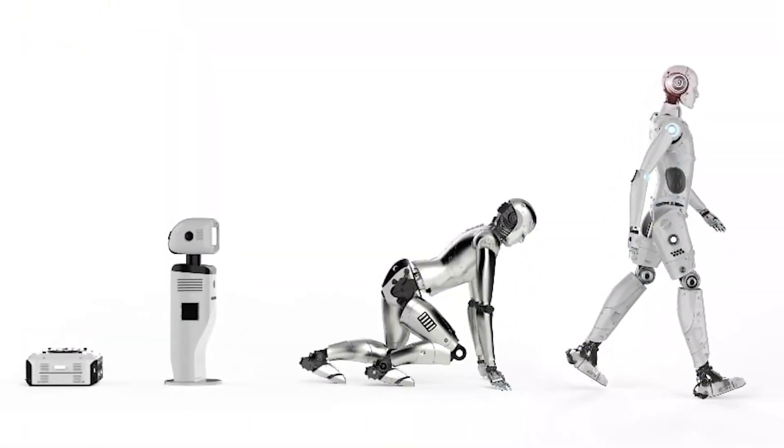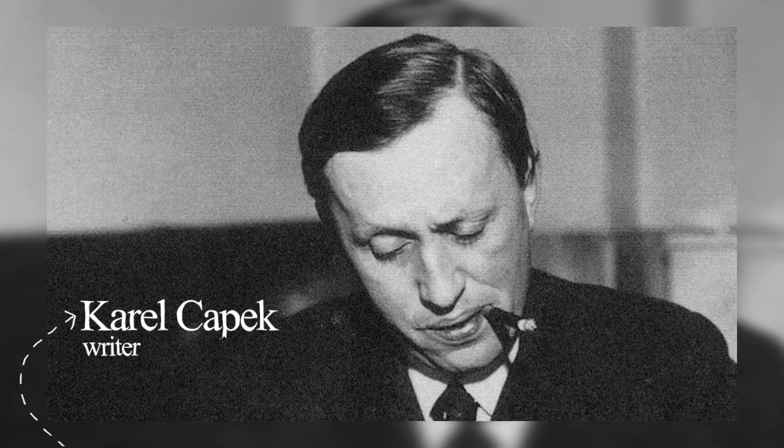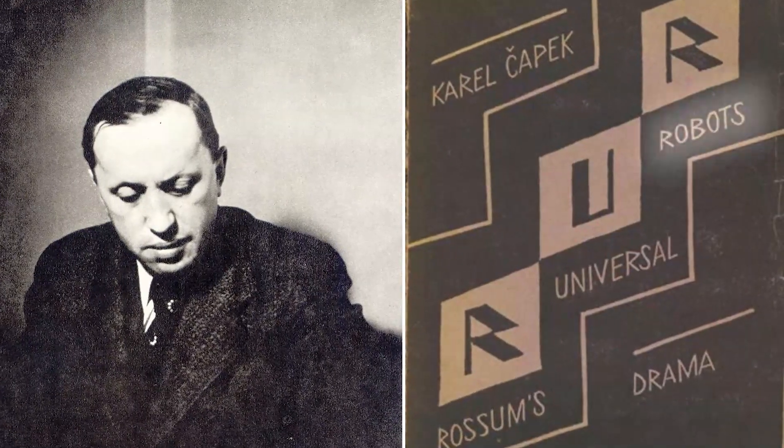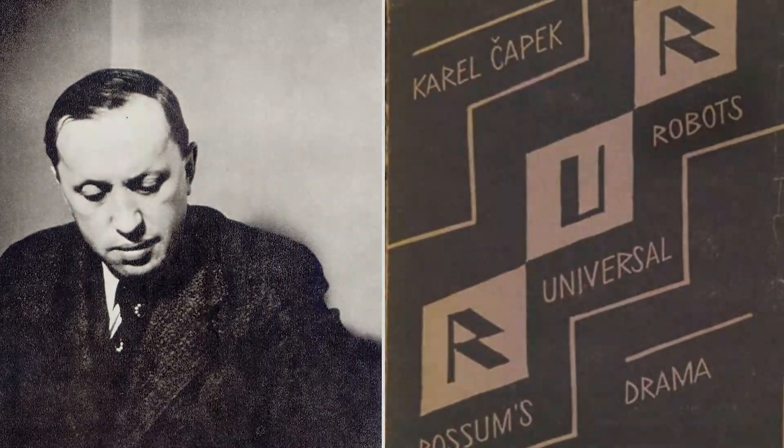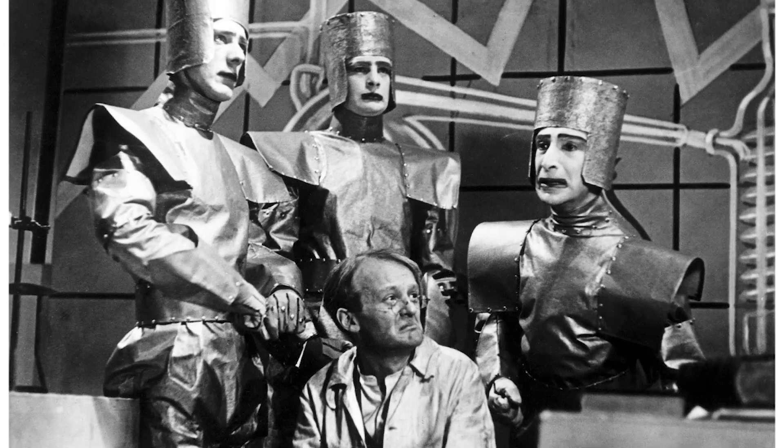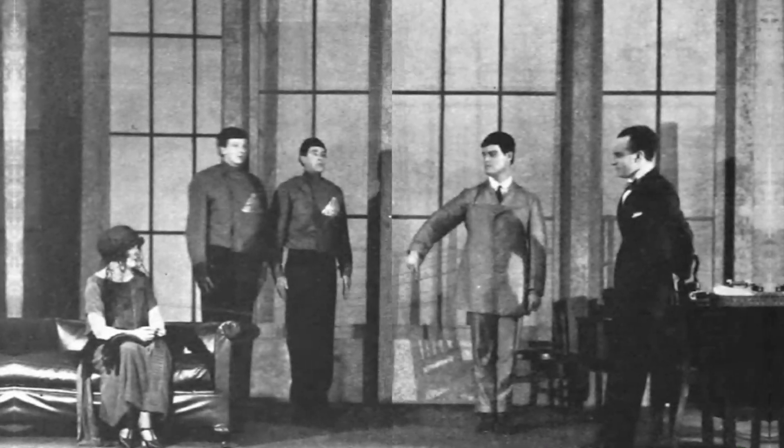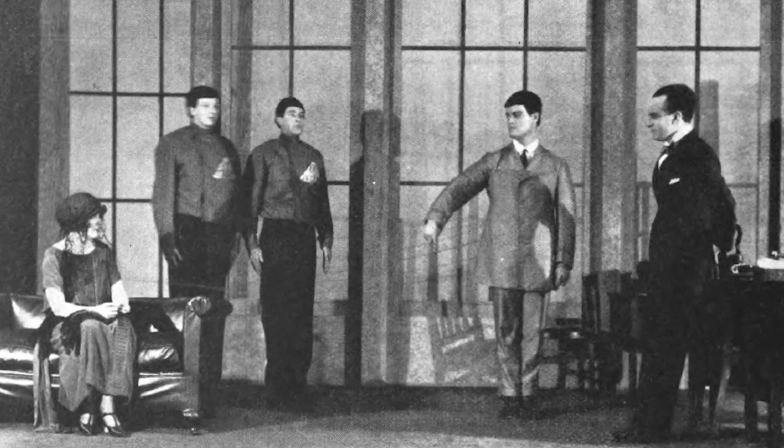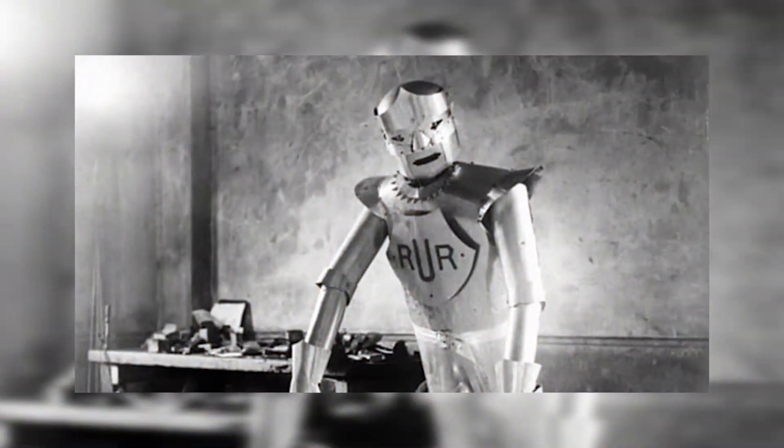Czech writer Karel Capek was the first to mention the word robot in his fiction in 1920. The story revolves around a company that produces workers, mostly robots. These so-called workers did every activity that humans couldn't do and all they lacked were feelings.